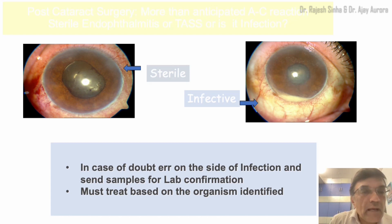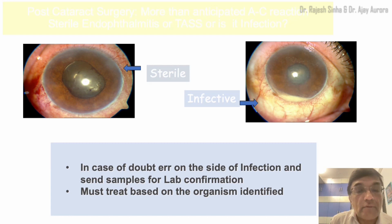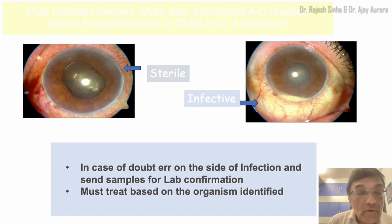Whenever we have a case with inflammation post-surgery, it could either be toxic anterior segment syndrome (TASS) or infection. It is very important to be able to differentiate between TASS and endophthalmitis. If there is a hypopyon and vision is affected and it occurred within 12 to 24 hours, it is likely TASS; but if it occurred later, around 3 days, it is likely endophthalmitis. We will not go into the details of differentiating TASS and endophthalmitis in this video, as I intend to bring up a dedicated video on that soon.